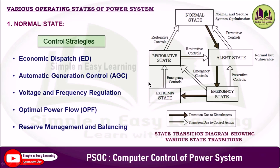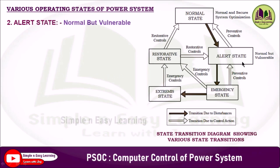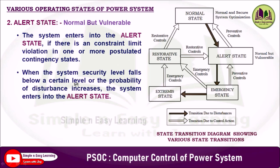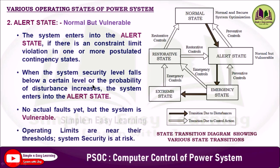The alert state is also a normal state but is vulnerable. The system enters this alert state if there is a constraint limit violation in one or more postulated contingency states. A postulated contingency state is a hypothetical or assumed failure scenario used in system planning and reliability analysis — conditions under which part of the power system is assumed to fail or be removed from service. When the system security level falls below a certain level or the probability of disturbance increases, the system enters the alert state. No actual fault has occurred yet, but the system is vulnerable and operating limits are near threshold values.